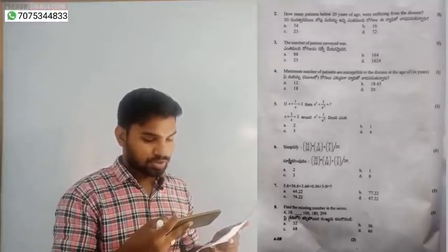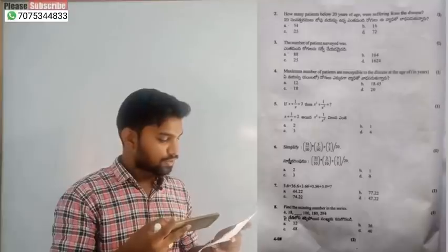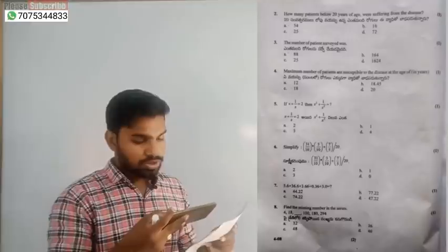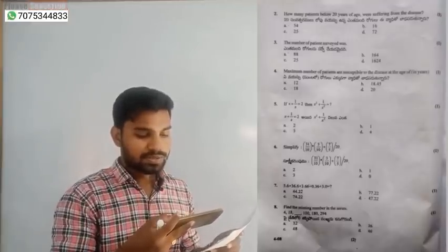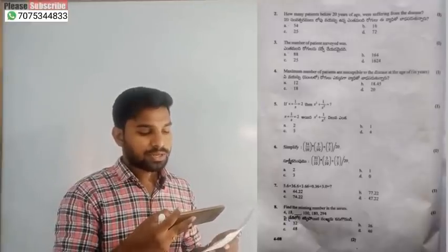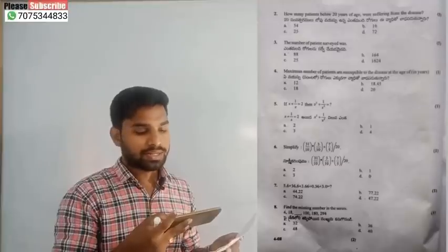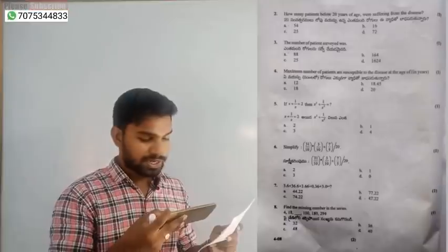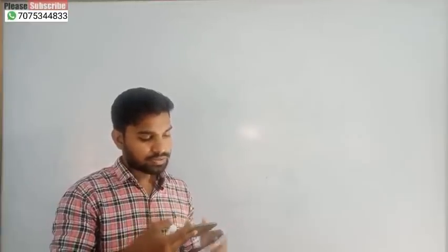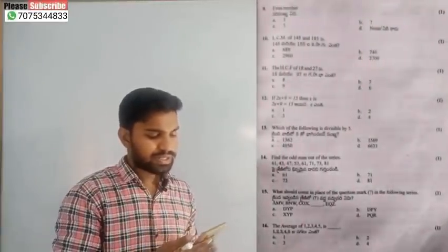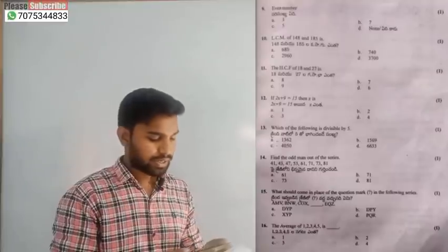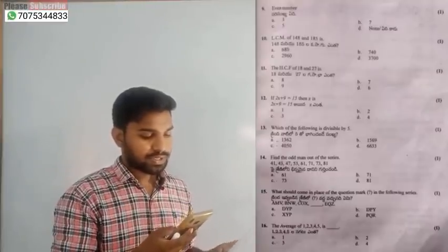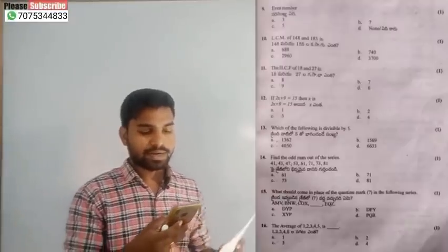The answer is 47.22 — option D is the correct answer. Next, question number 8: the missing number — two cube minus two square or three cube minus three square series — so the answer is 3. Question number 9: even number, the answer is even number 4, none of these — option D is the correct answer.